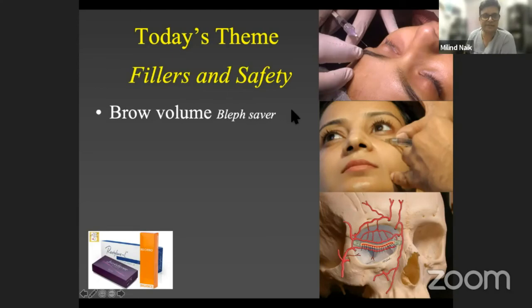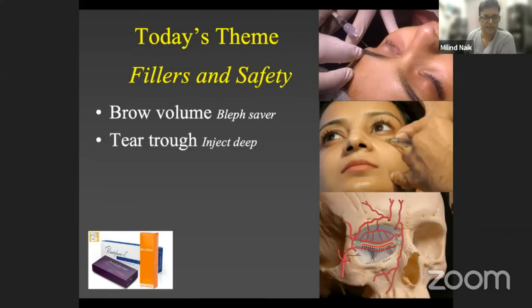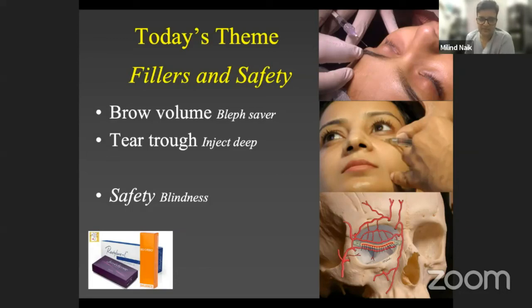Just a quick recap: brow volume is sometimes a blepharoplasty saver and you have to think about it before you plan the blepharoplasty. There can be cases where you do a bleph and intra-op you decide to inject fat into the brow area — that combination is possible. For tear trough, prefer to inject deep and also on the cheek side of the anatomy — that's my personal experience. With regards to safety, we are all concerned about blindness, for which using a finer needle, shifting to a cannula, using vasoconstriction such as application of ice, injecting very slowly, and aspirating prior to injection would all help in minimizing this complication.